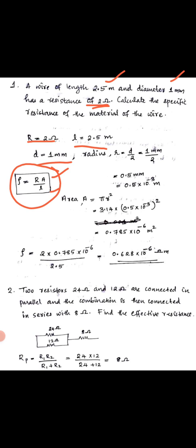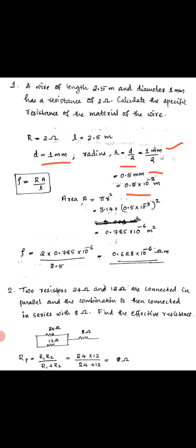The diameter is 1 millimeter, so the radius = diameter divided by 2 = 0.5 millimeter. Converting to meters: radius = 0.5 into 10 raised to minus 3 meter. The area of cross-section uses the circle formula: area = pi r squared.